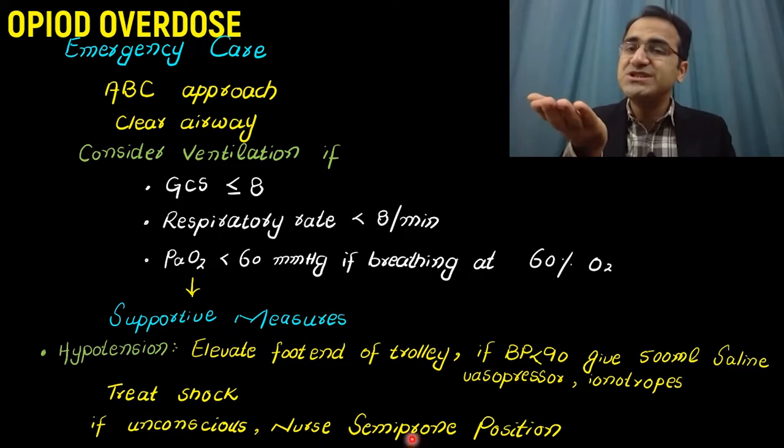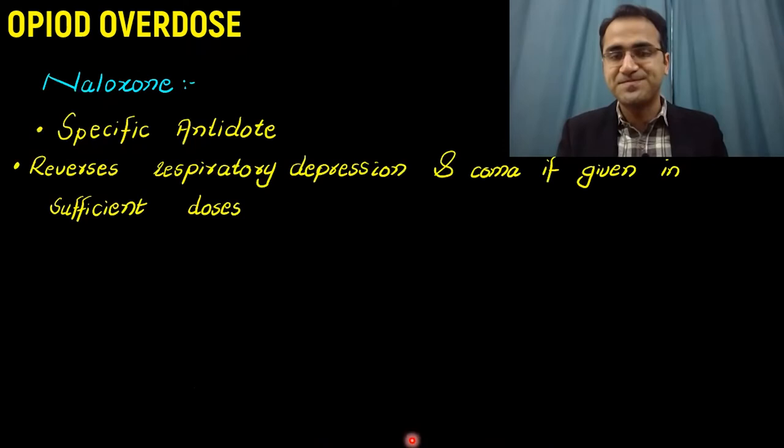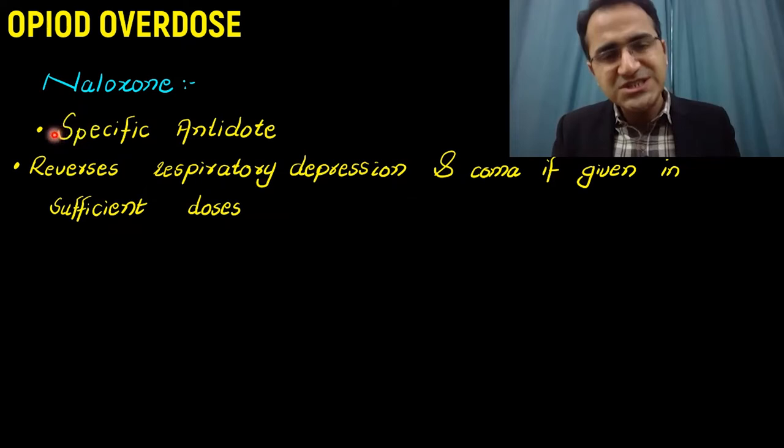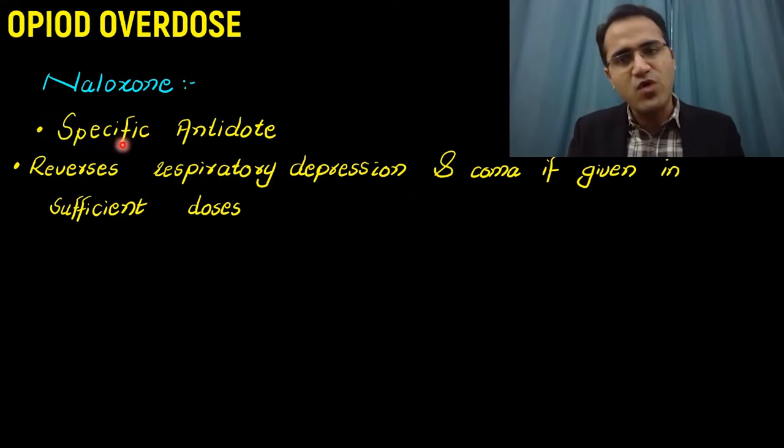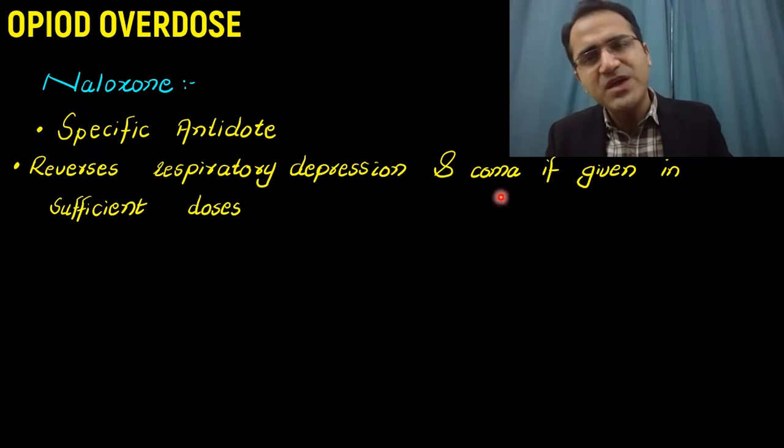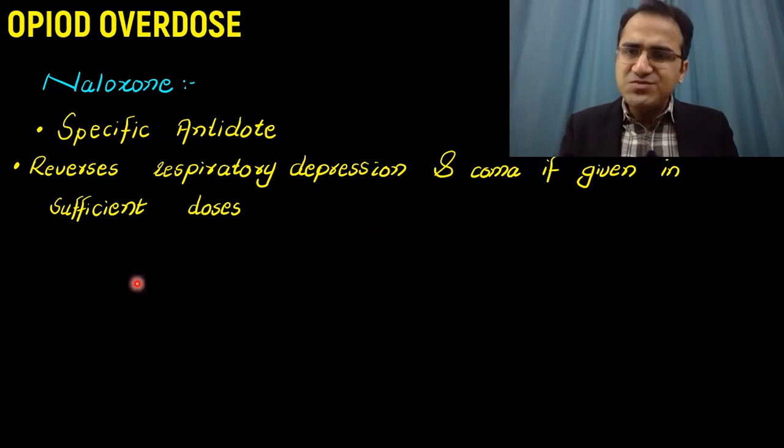If the patient is unconscious, nurse the patient in the semi-prone position to prevent aspiration. The specific antidote and most important treatment for opiate overdose is naloxone. Naloxone is a specific antidote that reverses respiratory depression and coma if given in sufficient doses at a sufficient time.